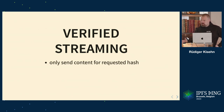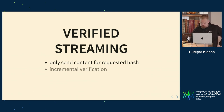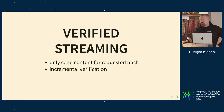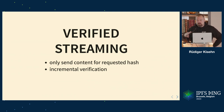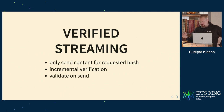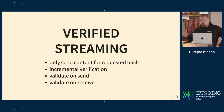Verified streaming means we want to send content over the wire only if it was requested via a hash, and we never want to send something that doesn't match the hash. We want incremental verification — you should notice very early if somebody sends you wrong data, whether due to a bit flip on the wire, malice, or whatever. And we want to validate on both send and receive.